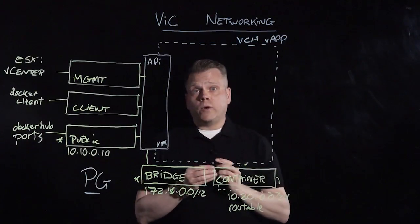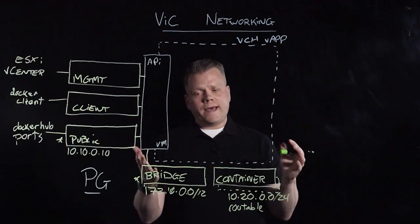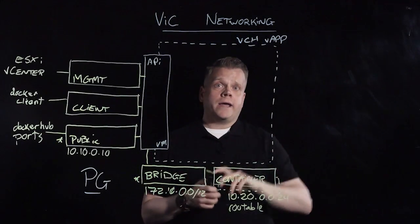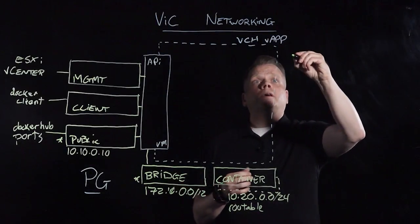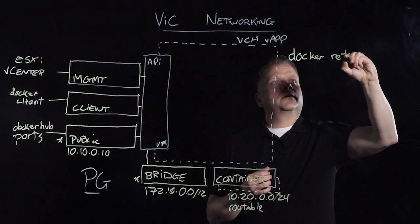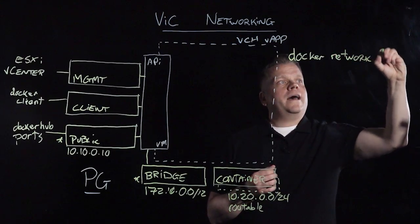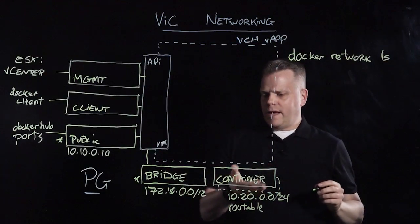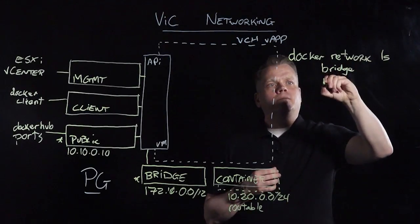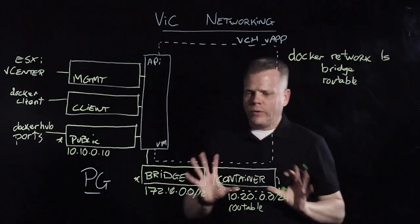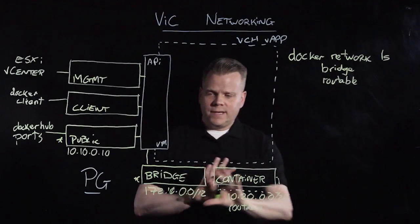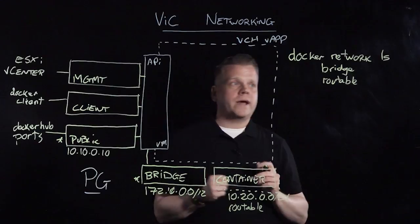Let's take a look at what this looks like when consuming through a Docker network. With the container host, we're mapping vSphere resources into the Docker API from a consumption standpoint. If I do a "docker network ls", I'm going to get two networks defined: my bridge network and my routable network. We're mapping vSphere resources into this Docker API for consumption.